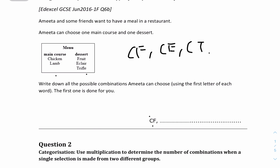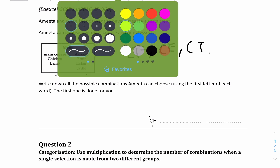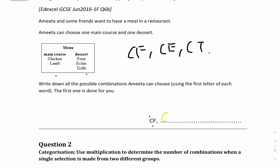So we have C-F, C-E, and C-T for the chicken options. And then for lamb it will be the same: lamb and fruit, lamb and eclair, and lamb and trifle.